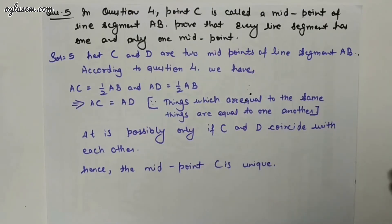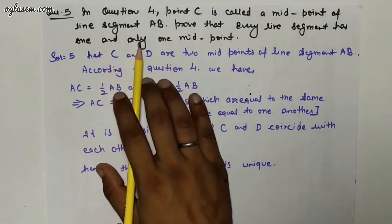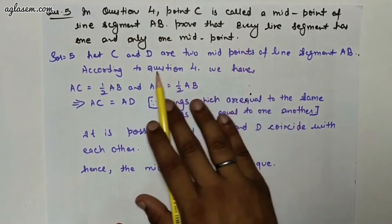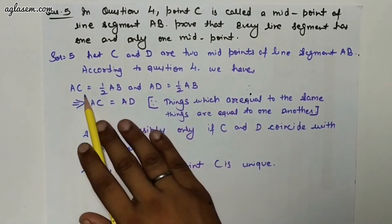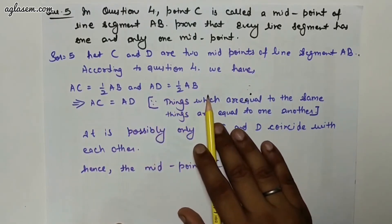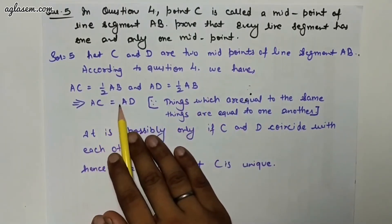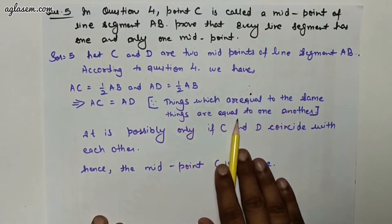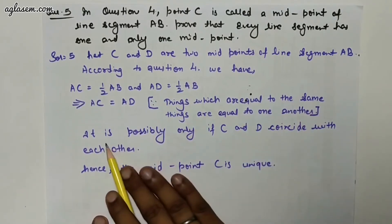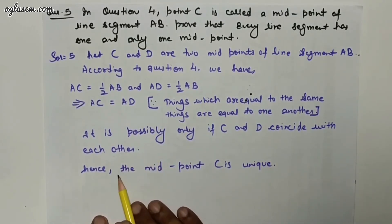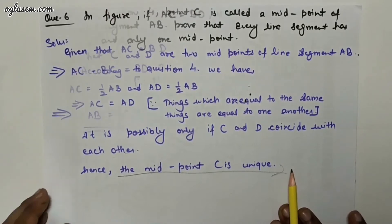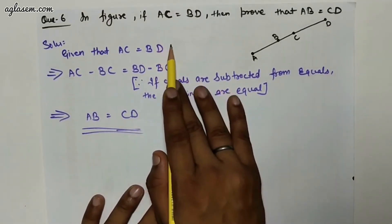Question number five: in question four, point C is called a midpoint of line segment AB. Prove that every line segment has one and only one midpoint. Let C and D be two midpoints of line segment AB. From question four, AC equals one-half AB and AD equals one-half AB. So AC equals AD, because things equal to the same thing are equal to one another. This is only possible if C and D coincide; hence the midpoint C is unique.